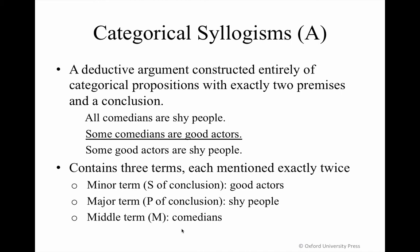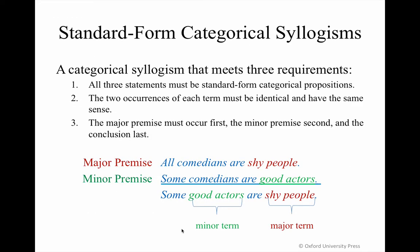You want to identify your conclusion first, because that will tell you what your major and your minor terms are. Not every argument is going to arrive already in standard form for the categorical syllogism. Let's take a look at what the requirements are. First, the three statements involved must be in standard form for the categorical proposition.